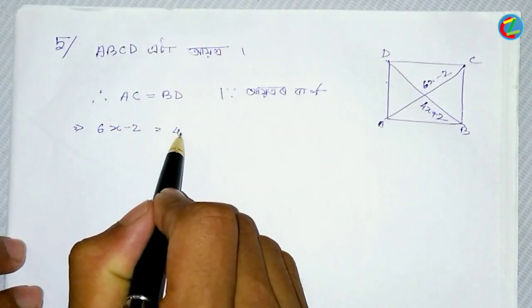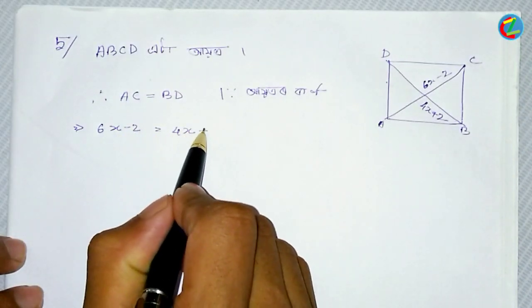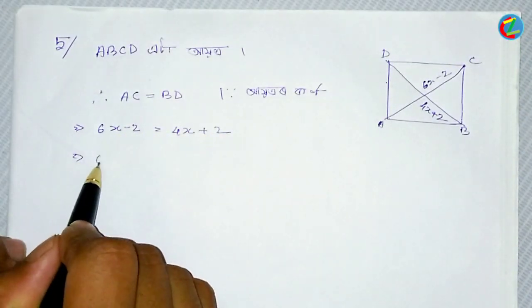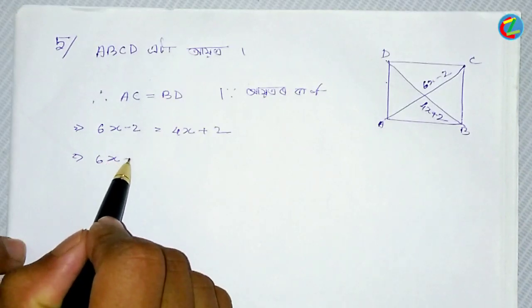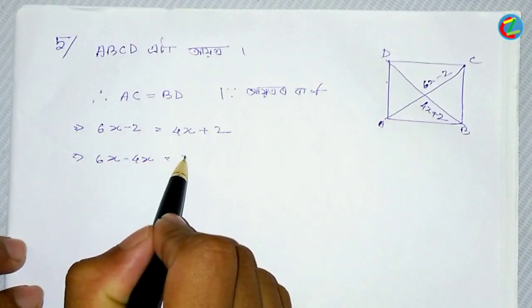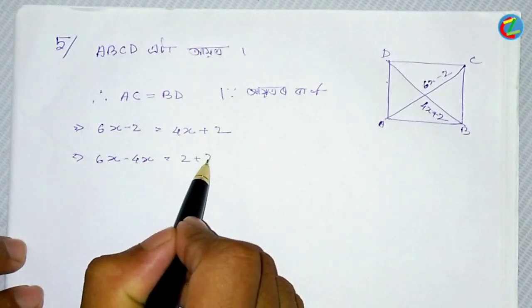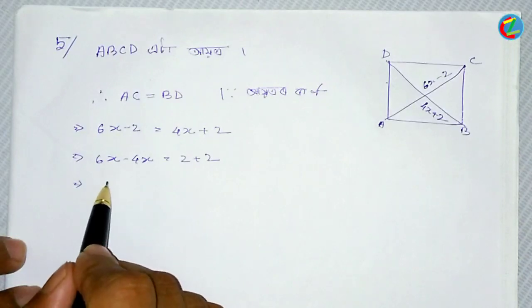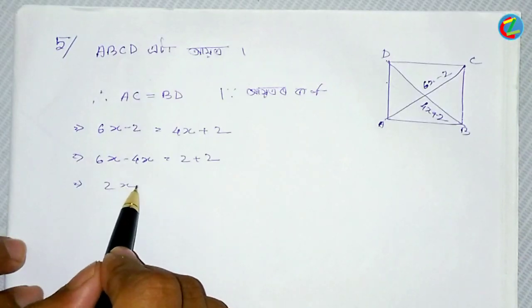6x minus 2 is equal to 4x plus 2, and this is equal to 80. So, we have x to find, and we have to find it.